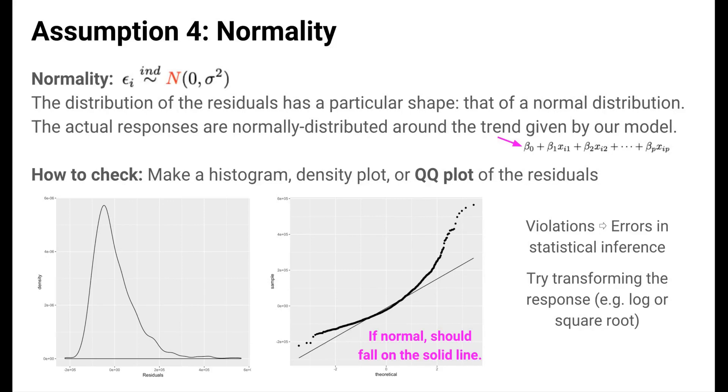As with the homoscedasticity assumption, violations lead to errors and statistical inference. We can try to make our residuals more normally distributed by transforming the response variable.